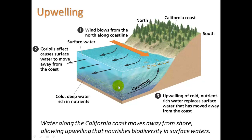Under certain wind patterns, the water at the surface gets pushed away from the coast, and that causes water from the bottom to come up and take its place. That's really, really important because it's bringing nutrients up to where the algae need it. And the fish depend on those algae. So it really is essential for life.